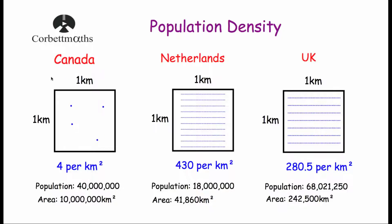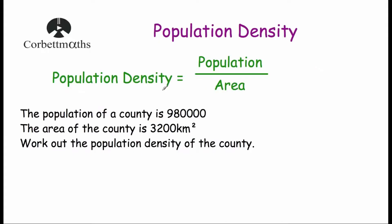One thing to note: Canada has a population density of 4 per kilometre squared, but that does not necessarily mean the whole country is uncrowded. There's a lot of forest and frozen land towards the north, whereas in the south there are larger cities with much higher population density. The formula for population density is: population density equals population divided by area. For each of our countries, we divided the population by the area to get the population densities.